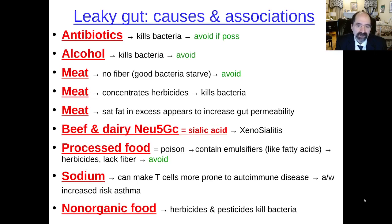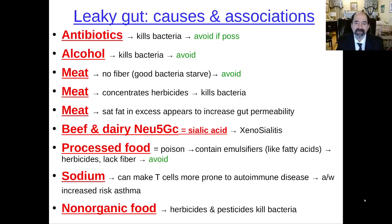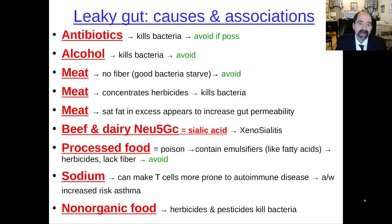Beef and dairy contain Neu5GC, a type of sialic acid. That can cause something called xenosialitis, meaning it's so similar to our own sialic acids — the glycoprotein residues at the tip of the glycocalyx on the outer surface of cells that are important for immune recognition. The intestinal tract thinks they belong in our bodies and puts them on cells, but the immune system doesn't agree. We're not supposed to have Neu5GC on our cells, and then it causes an immune response to them.